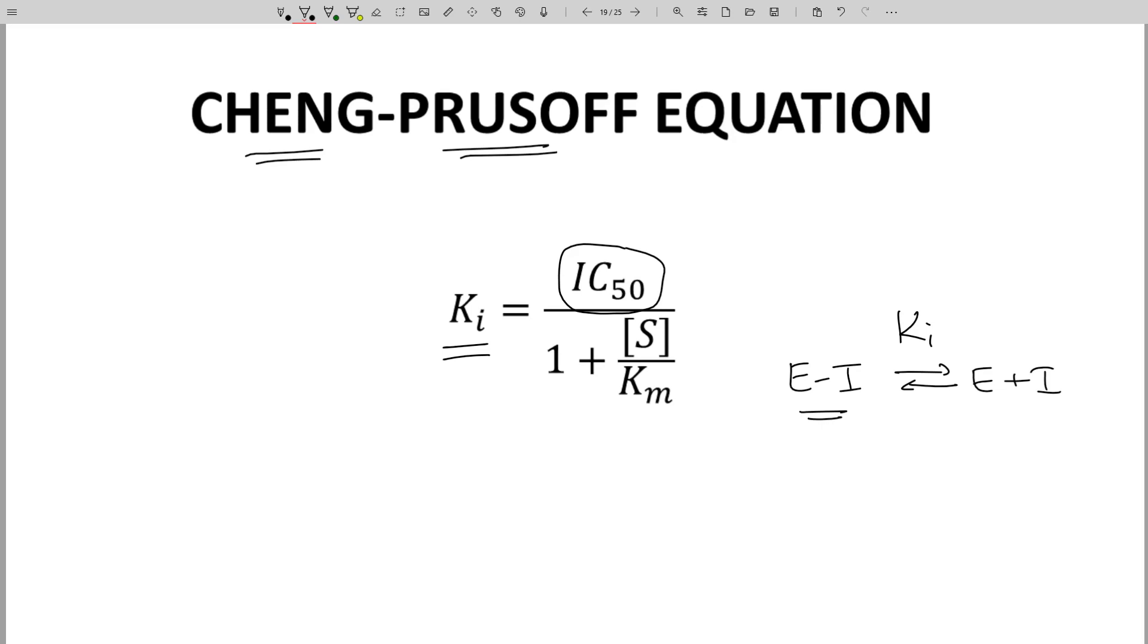Using the Cheng-Prusoff equation does require some information. You need the Km of the substrate for the enzyme. You also need to know the concentration of the substrate used in the binding assay. Note that when you do this conversion, Ki will always be a little smaller than IC50 since the denominator will always be greater than or equal to 1.